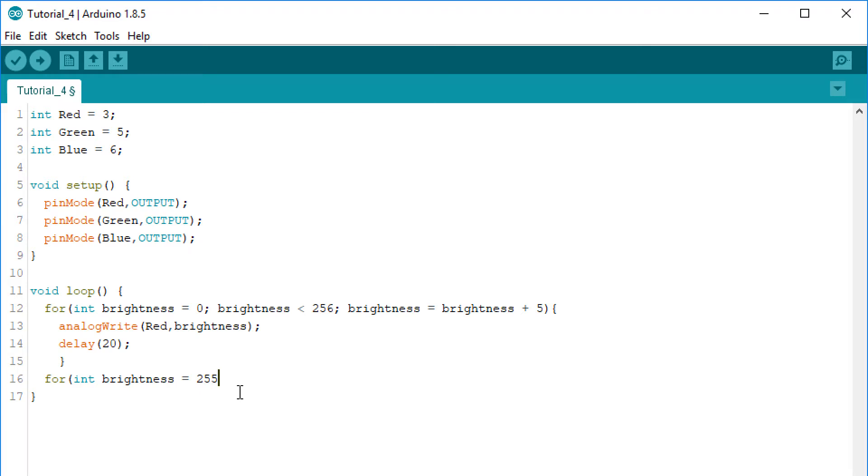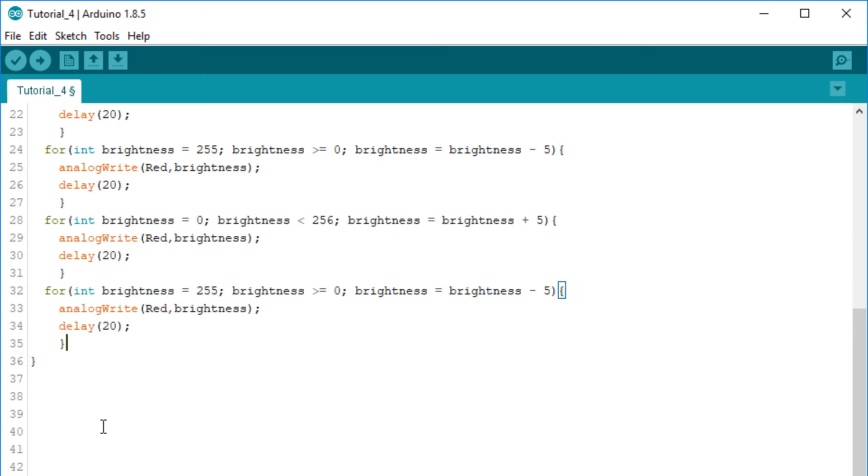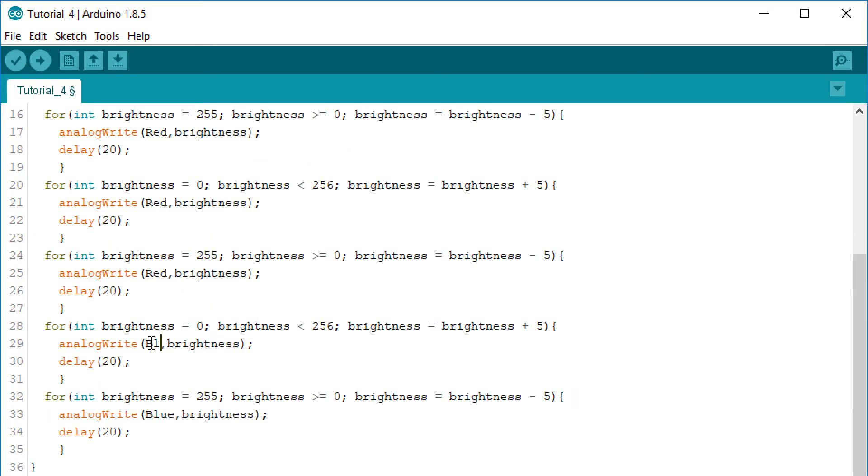Now we want to slowly decrease the brightness with another for loop. Now we start the looping variable from 255 and exit the loop when we reach 0 and with every cycle we decrease its value by 5. Everything else is the same. Now we have a red LED with changing brightness. We copy both for loop and make the exact same thing to the green and blue pin, we only have to change the analogWrite functions.